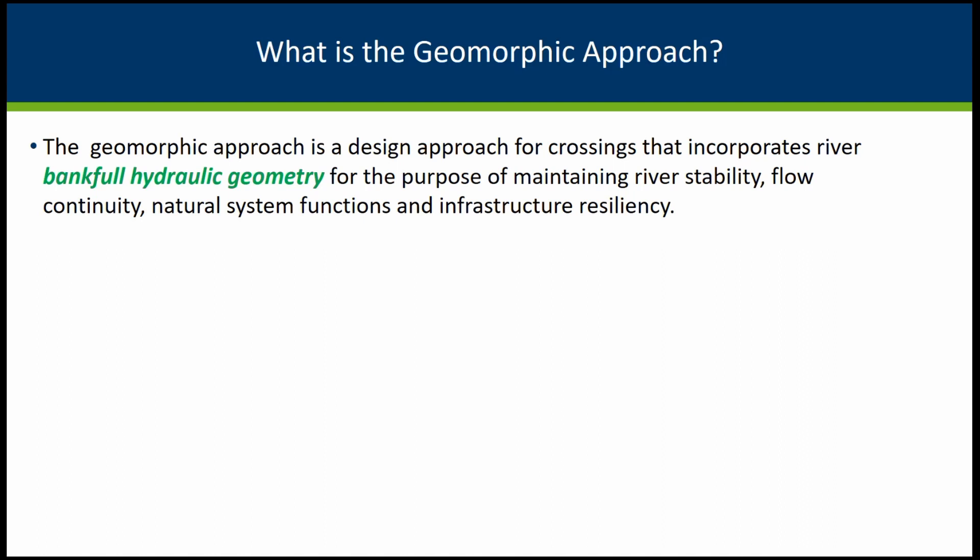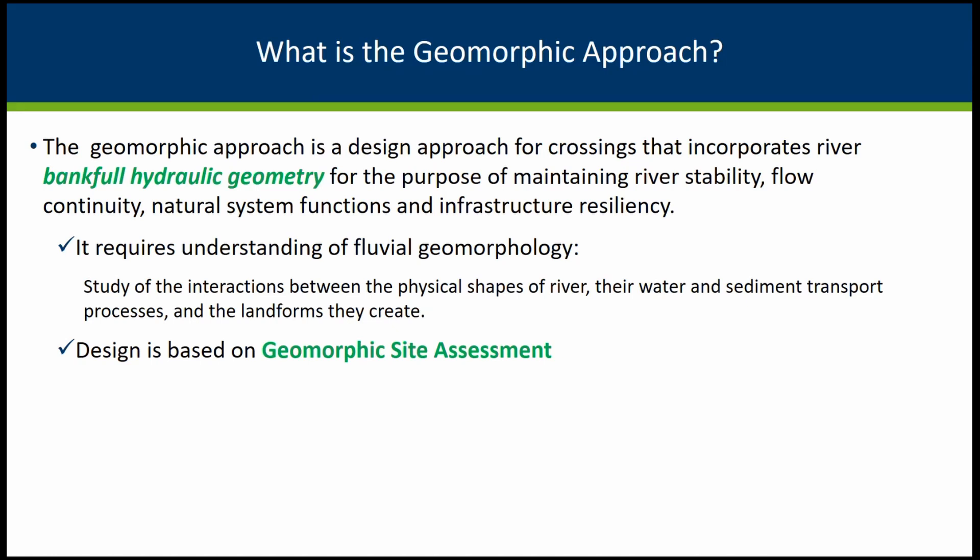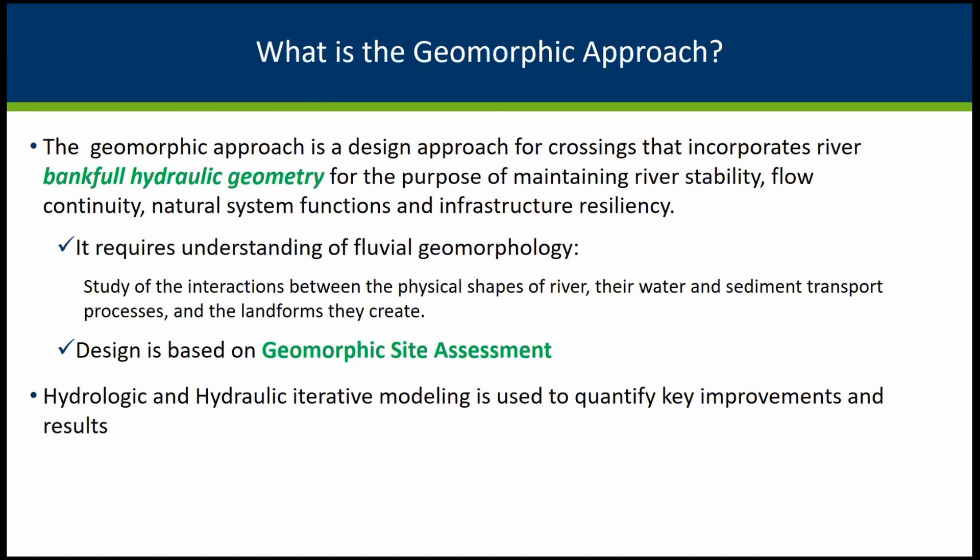The geomorphic approach helps us understand the natural stable conditions of a stream, and that becomes the basis for the design because we want to maintain that stream stability once we introduce the proposed conditions. It requires the understanding of fluvial geomorphology — the study of the interactions between the physical shapes of rivers, their water and sediment transport processes, and the landforms they create. Once we introduce those bankfull metrics, we go through hydrologic and hydraulic iterative modeling to quantify key improvements, then submit the hydraulic proposal which turns into a design.